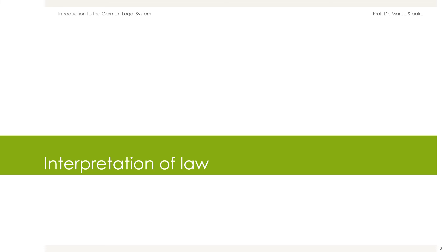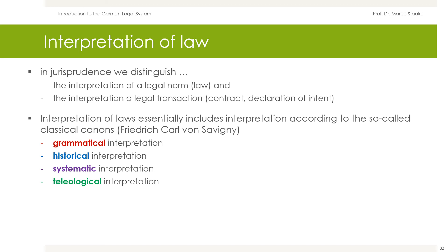After this short overview of the legal instances, areas of law, and jurisdictions, let's take a last look at aspects of the method of law — the interpretation of law. In jurisprudence, interpretation can have different meanings. We distinguish the interpretation of a legal norm from the interpretation of a legal transaction: on the one hand, the interpretation of law; on the other hand, the interpretation of contracts or declarations of intent.